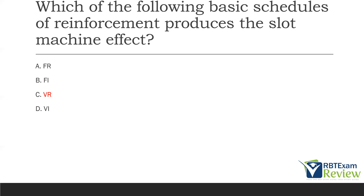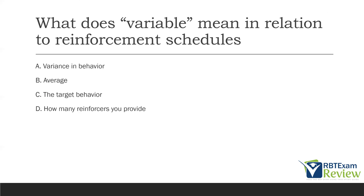A variable ratio schedule means an average number of responses produces reinforcement. What does variable mean in relation to reinforcement schedules? When we talk about variable, we're talking about an average. So when we say variable ratio, we're talking about a number of responses on average. When we talk about variable interval, we're talking about an amount of time on average. When you see the word variable in relation to reinforcement schedules, we're talking about averages.